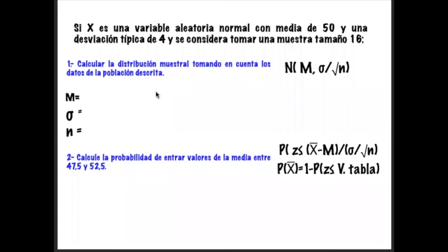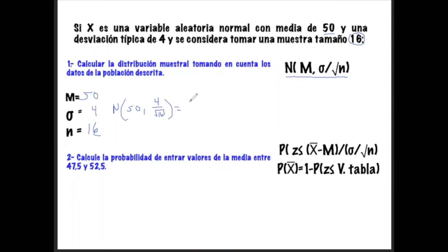Nos piden calcular nuevamente la distribución muestral tomando en cuenta los datos de la población bajo esta fórmula. Vemos que μ = 50 y la desviación típica es 4; estos son datos para nuestra población. Para una muestra de n = 16, ya tenemos todos los datos. Sustituyendo: media muestral = 50, y 4 / √16 = 4/4 = 1. Esta sería nuestra distribución muestral para este tamaño de muestra.